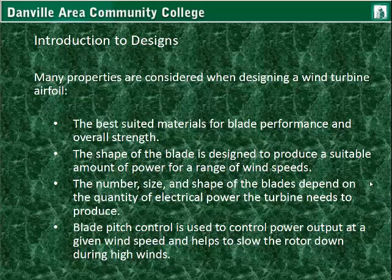The number, size, and shape of the blades depend on the quantity of electrical power the turbine needs to produce. Generally, if you need more power, go with a two to five blade design — you don't want more than that — and increase the overall length and shape of the blades to increase power. Blade pitch control is also used to control power output at a given wind speed and helps slow down the rotor during high winds. The blades have a critical angle where they harness the most wind, but that critical angle changes as wind speed increases, related to how the blades slice the air.